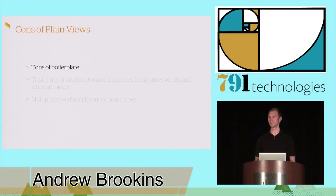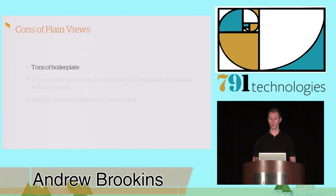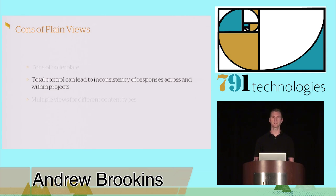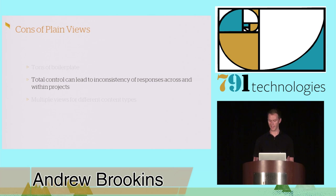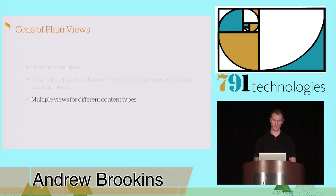Of course, there are some cons. You wind up with a lot of boilerplate around validating input data, setting up serialization and deserialization for multiple content types. Having total control can lead to inconsistency of your responses across and within projects — maybe multiple developers doing things differently in different apps, so the error structures differ and clients have to code differently. You might also end up with multiple views for different content types like XML or JSON, requiring extra work.